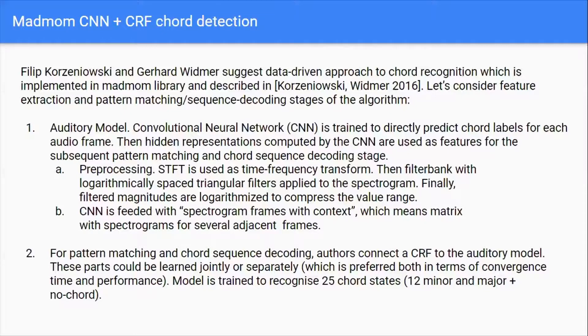CNN is paired with spectrogram frames with context, which means a matrix with spectrograms for several adjacent frames. For pattern matching and chord sequence decoding, the authors connect a CRF to the auditory model. These parts could be learned jointly or separately, which is preferred both in terms of convergence time and performance. This particular model is trained to recognize 25 chord states: 12 majors and minors plus the state where no chord is being played, the zero condition.